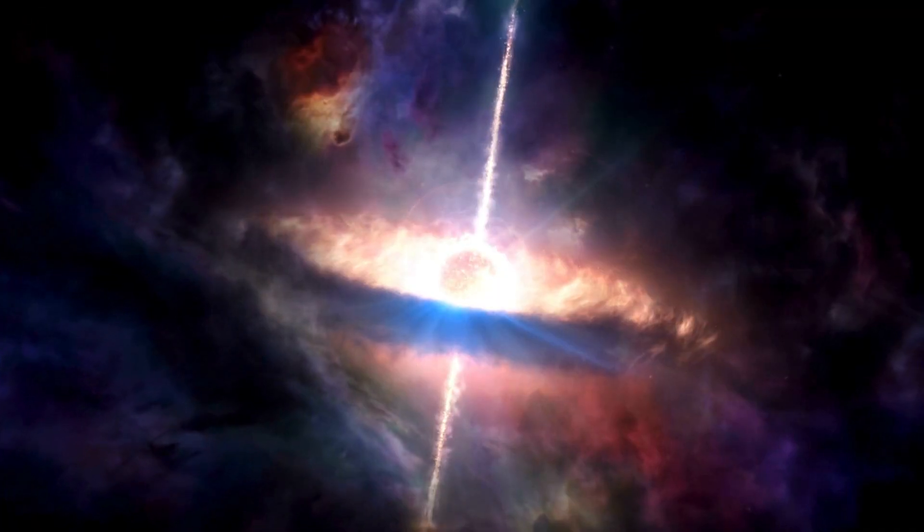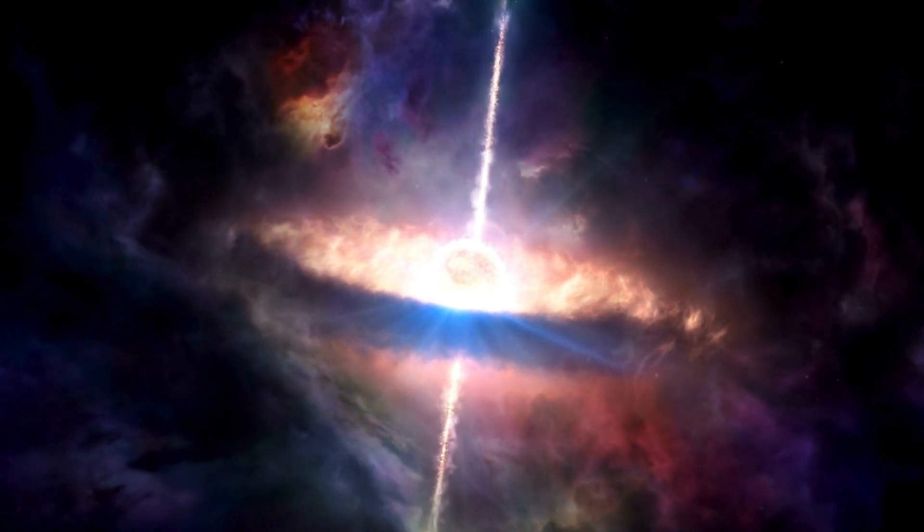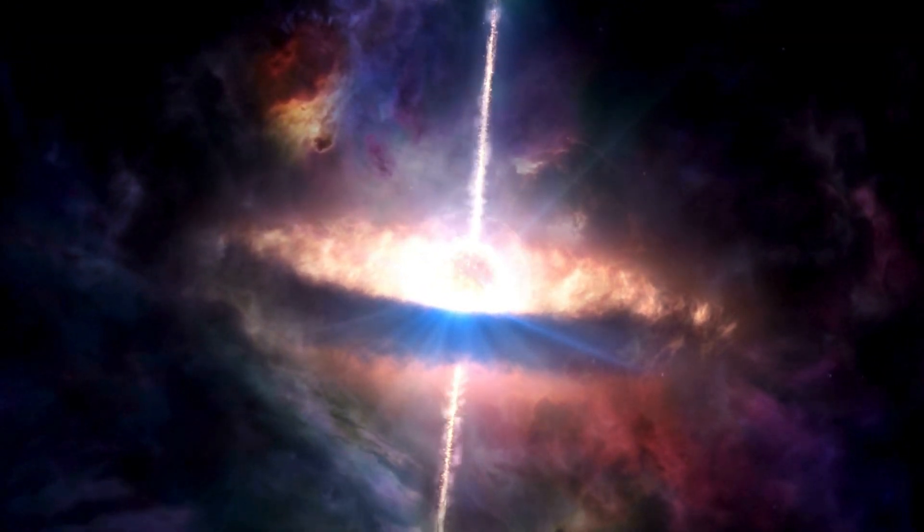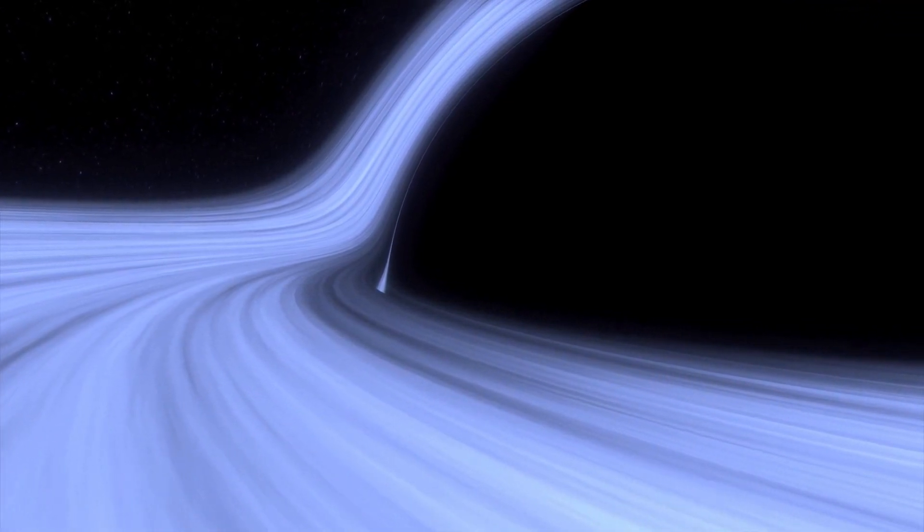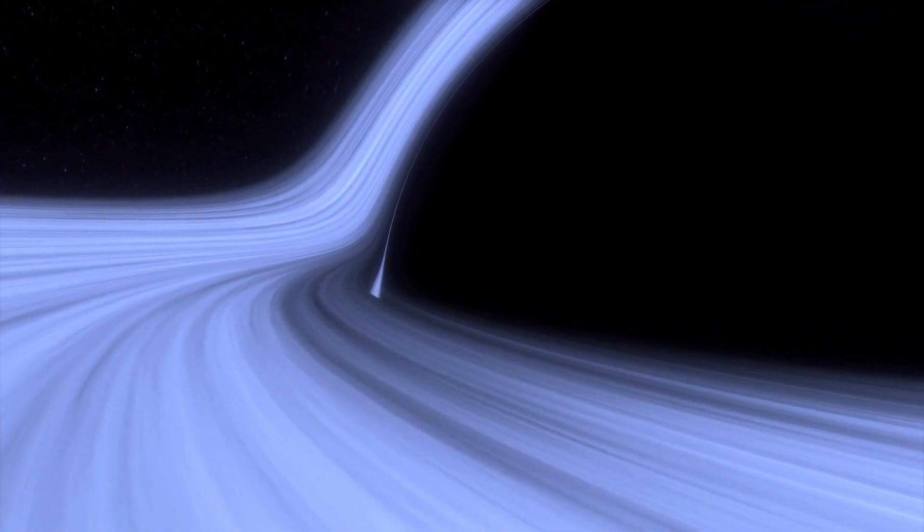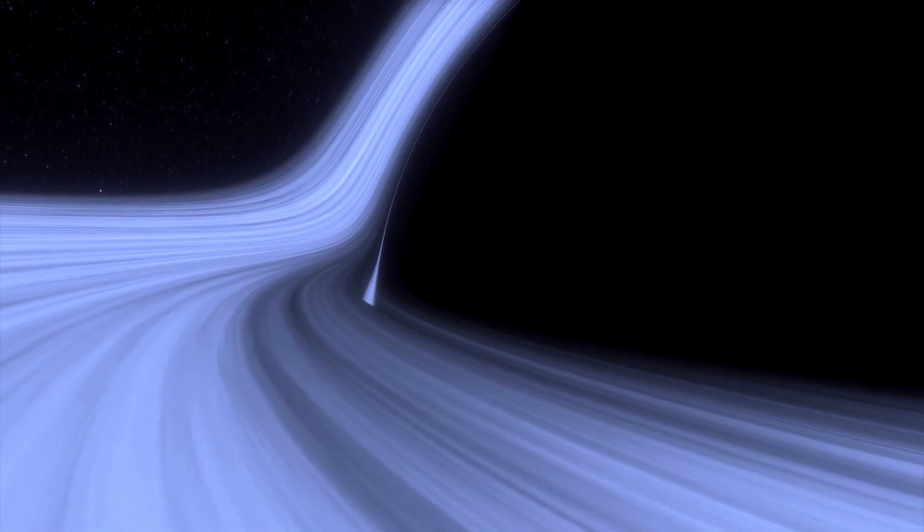Smaller stars, when they die, transform into something called neutron stars, which are super dense but not dense enough to trap light. However, if a star is about three times the mass of our sun, it collapses under its own gravitational pull, forming a black hole.